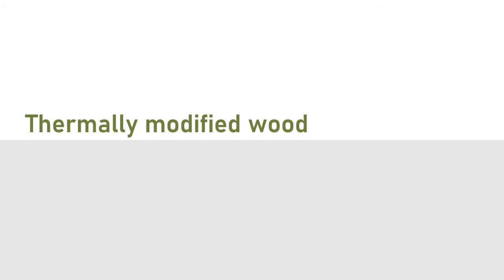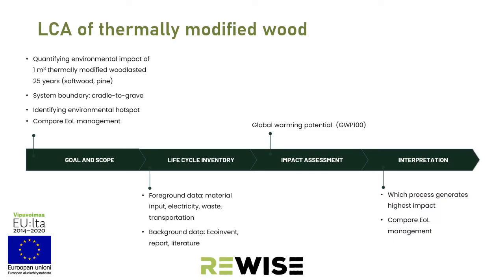Now we move on to an example in the forestry sector. We do LCA on thermally modified wood. Thermally modified wood can be softwood or hardwood that goes through thermal treatment to improve its properties, making it last longer when used in buildings. First we define the goal and scope: we quantify the environmental impact of one cubic meter of thermally modified wood lasting 25 years. We use softwood — pine — with a cradle-to-grave system boundary. We want to identify environmental hotspots and also perform some scenario analysis.